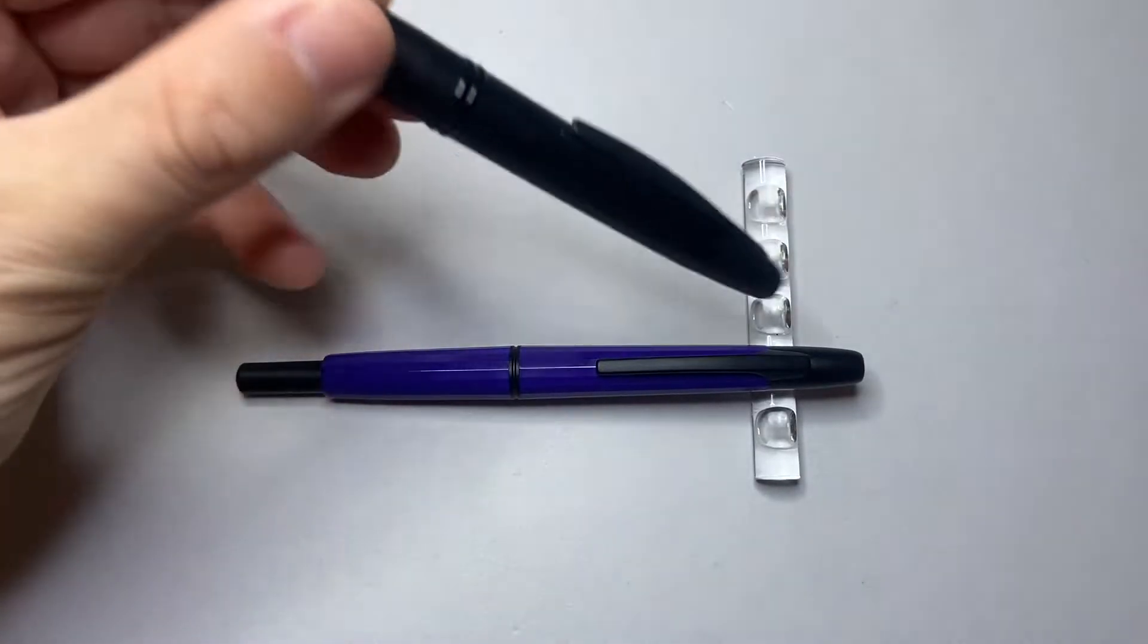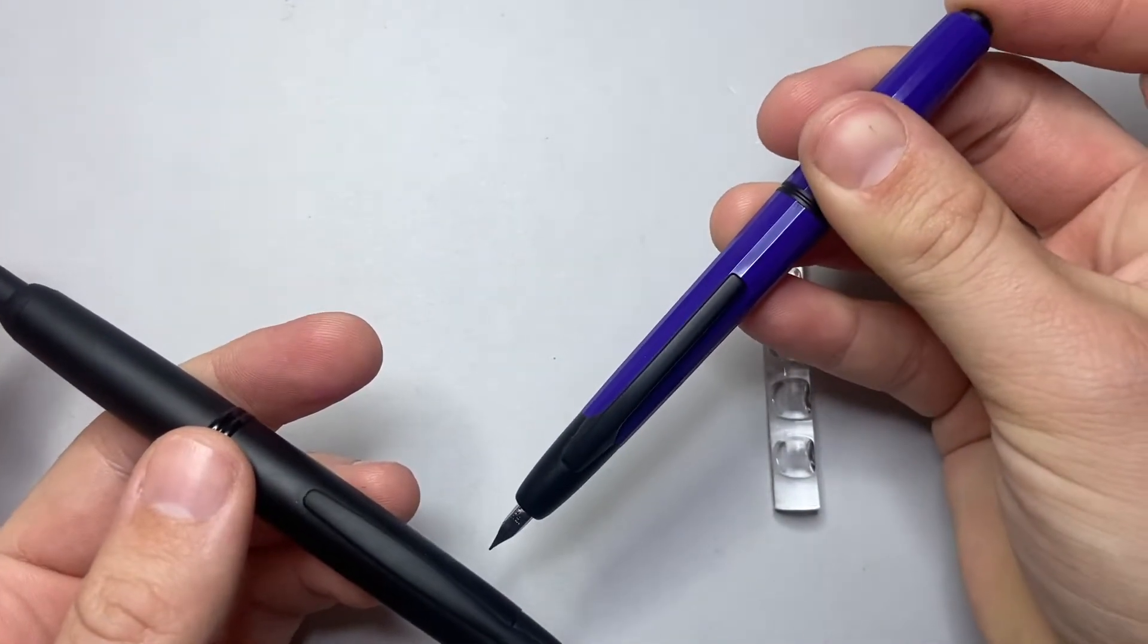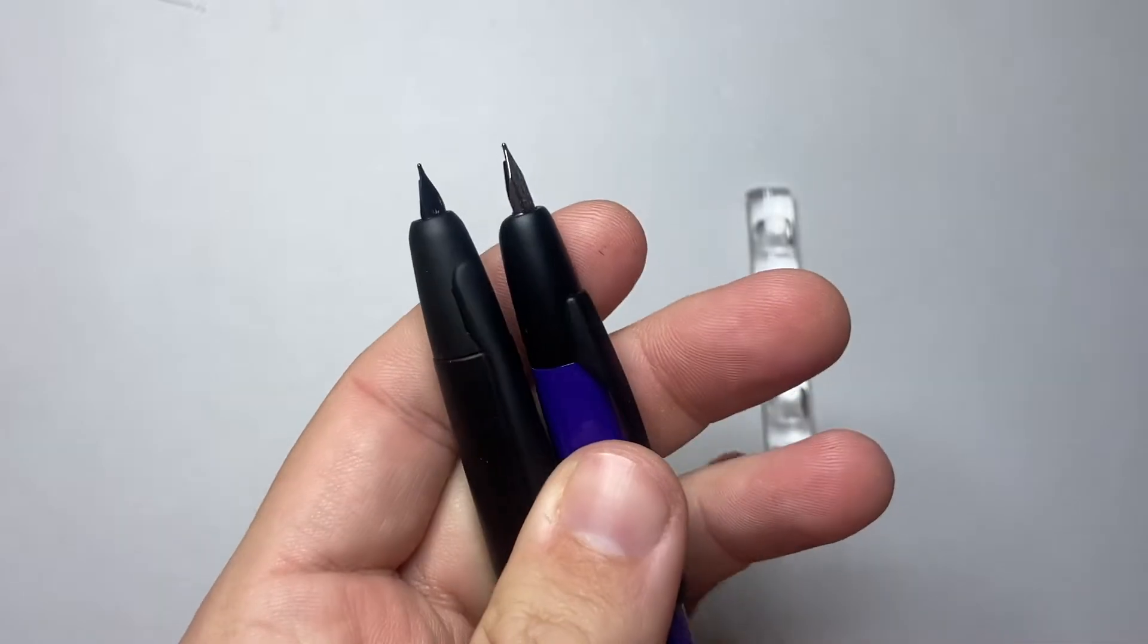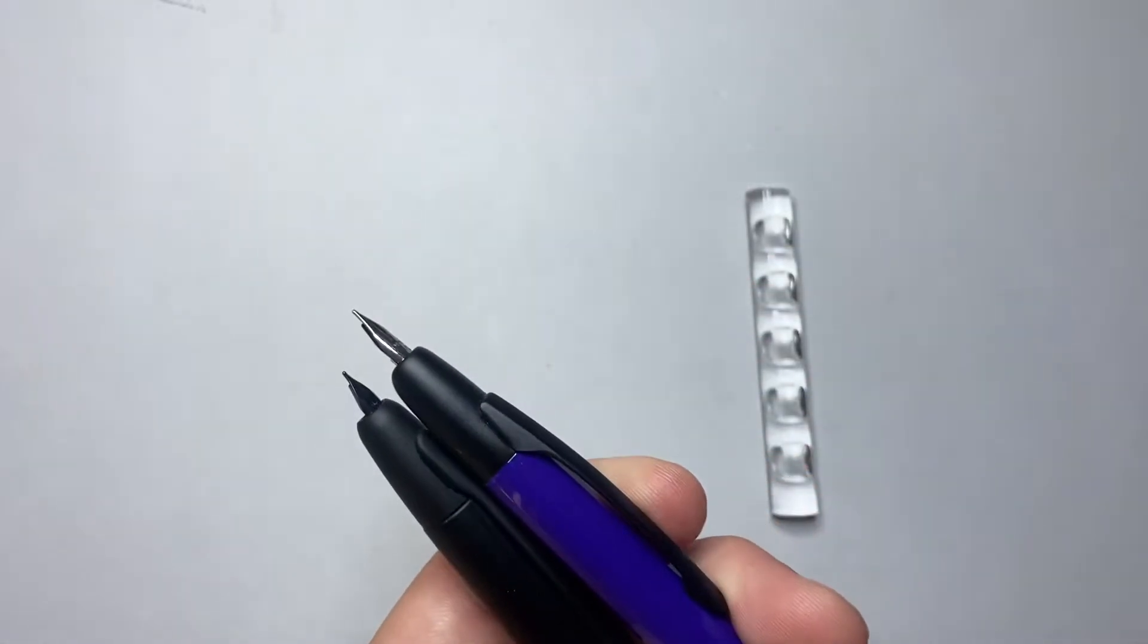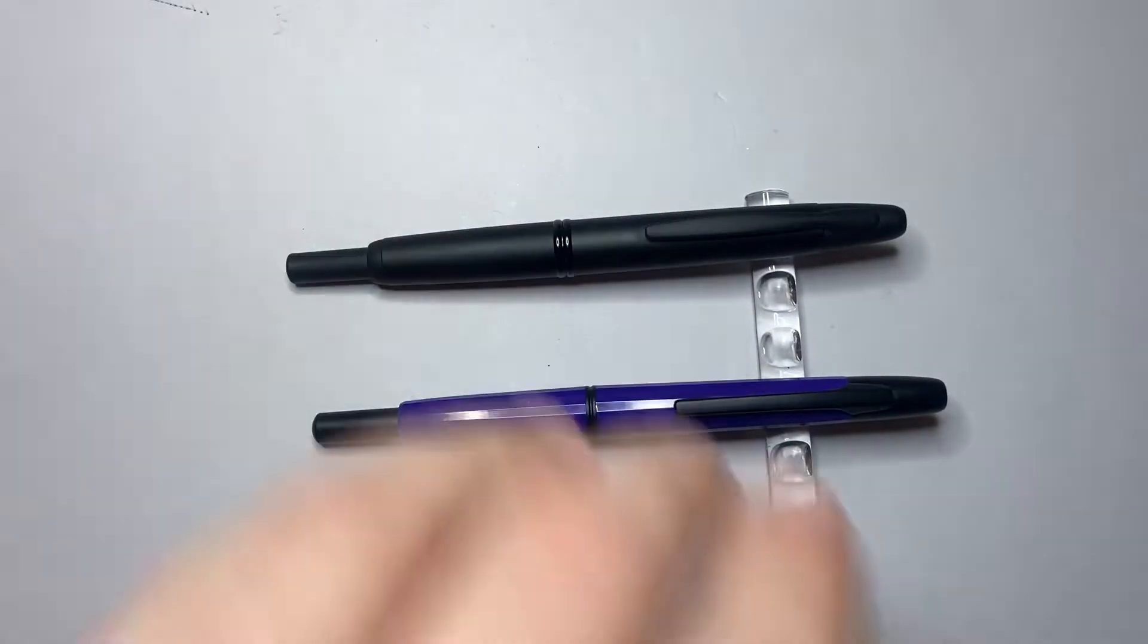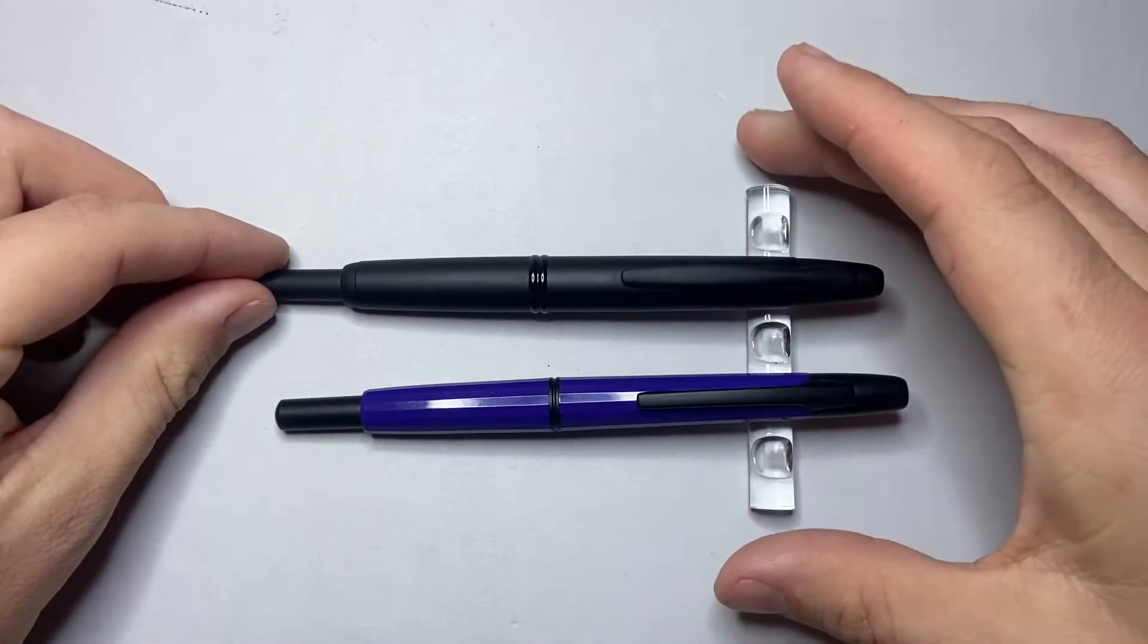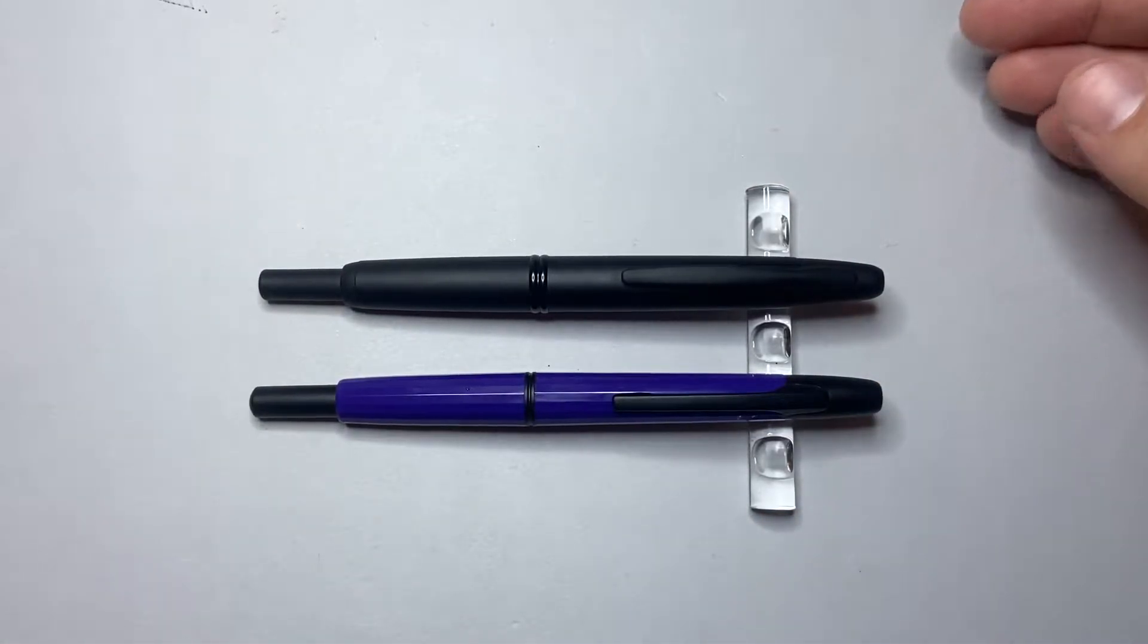Okay, so they are both click retractable fountain pens with a knock on the end that you knock to release the nib. And everything down to the nib shape is slightly the same. You can see the Moonman is very clearly modelled off the Pilot here. But it does come in at kind of like one eighth or one tenth, depending on what prices you can get these things at, of the price. So it's a much more affordable retractable fountain pen. It's a plastic body as opposed to the metal body. But the Moonman writes really well.